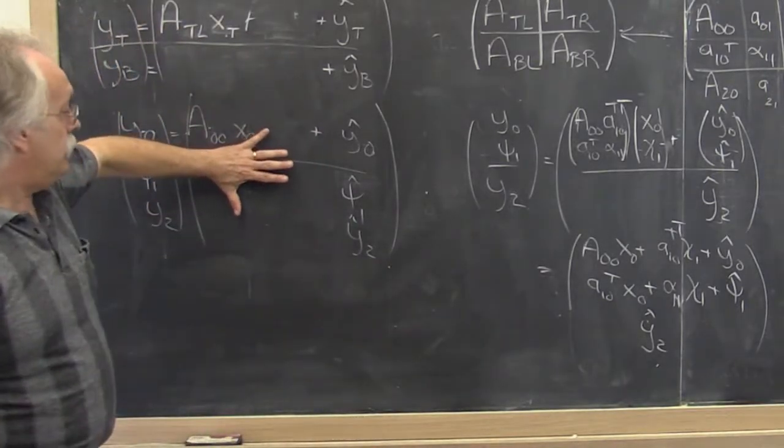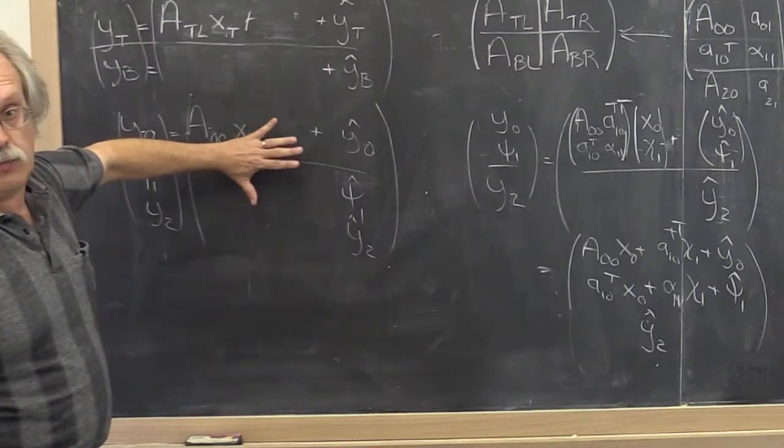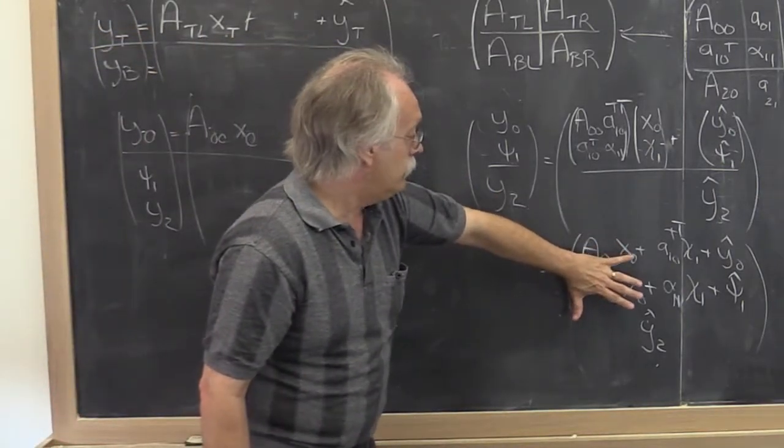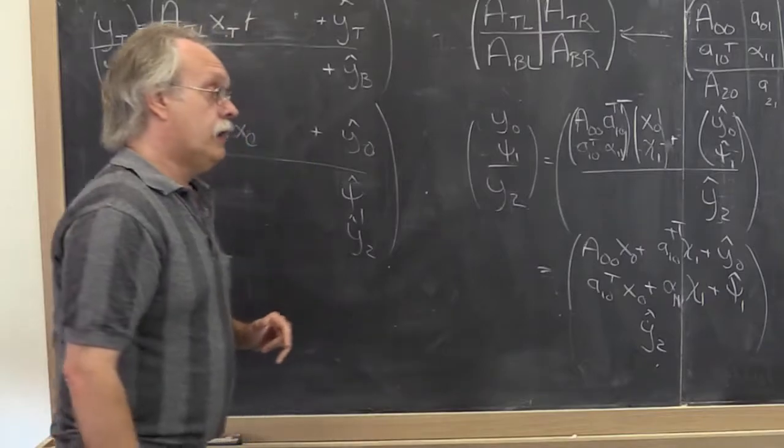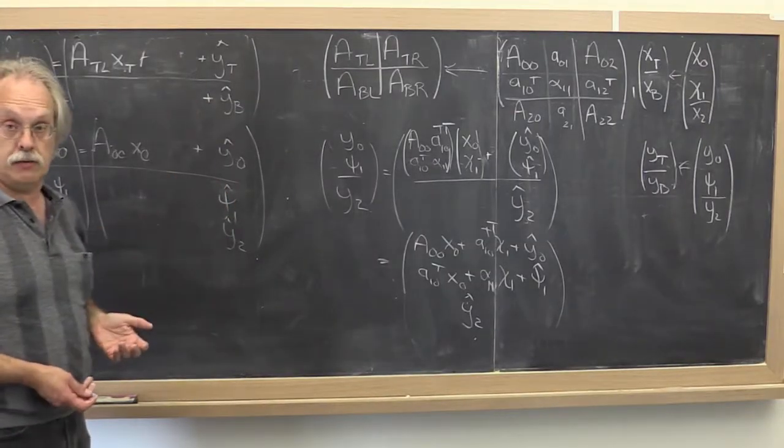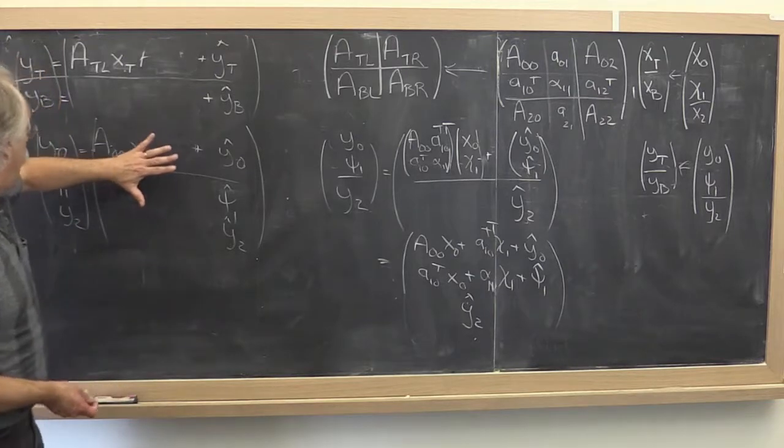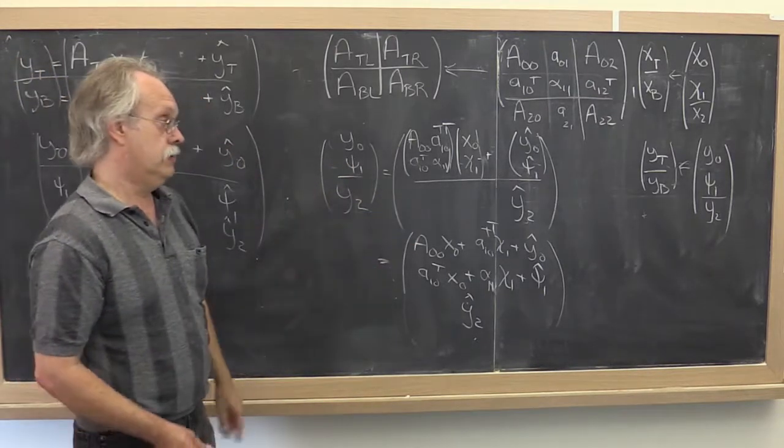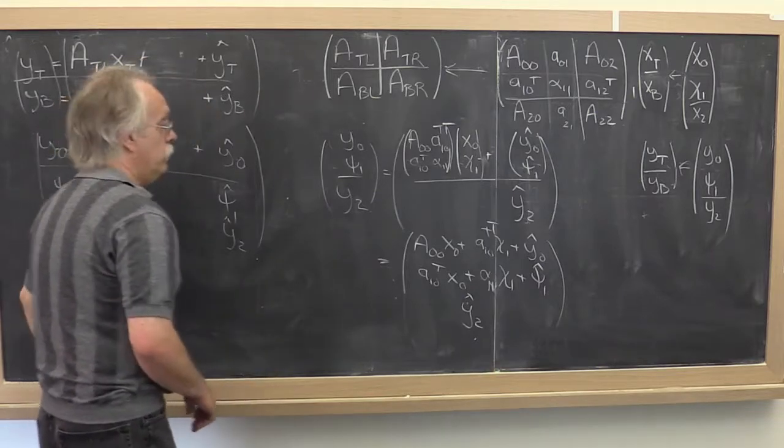So this is what's true at the top of the loop in terms of these pieces that we expose. This is what's in the vector at the bottom of the loop in terms of the pieces that are exposed. We need to somehow figure out how to update from here to here. How do we do that?